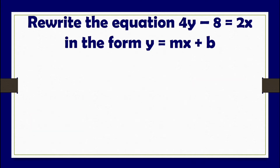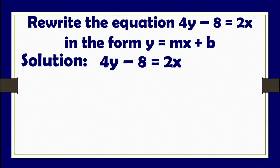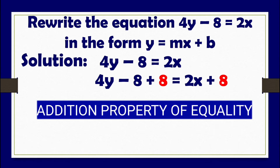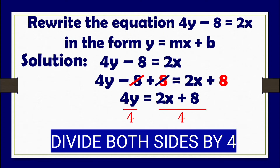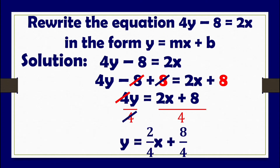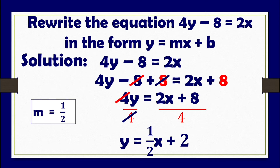Second example: rewrite the equation 4y minus 8 equals 2x in slope-intercept form. We transpose negative 8 to the right side using the addition property of equality. The simplified equation is 4y equals 2x plus 8. Dividing both sides by 4 gives y equals two-fourths x plus eight-fourths. Two-fourths simplifies to one-half, and eight-fourths simplifies to 2. The final equation is y equals one-half x plus 2, where slope m equals one-half and y-intercept b equals 2.